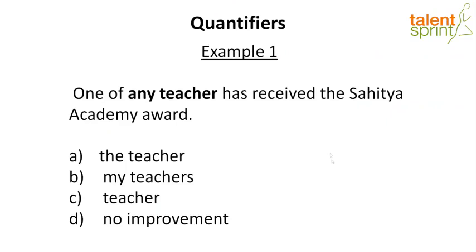Let's look at our first example: 'One of any teacher has received the Sahitya Academic Award.' The highlighted phrase is 'any teacher,' and the options are: the teacher, my teachers, teacher, and no improvement. One rule you need to remember is: sentences beginning with 'one of,' 'each of,' are always followed by a plural subject. So the only option giving a plural subject is option B, 'my teachers,' which is the answer.